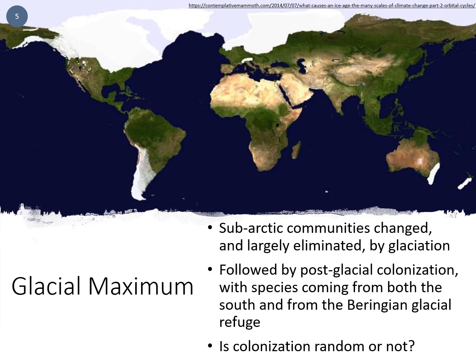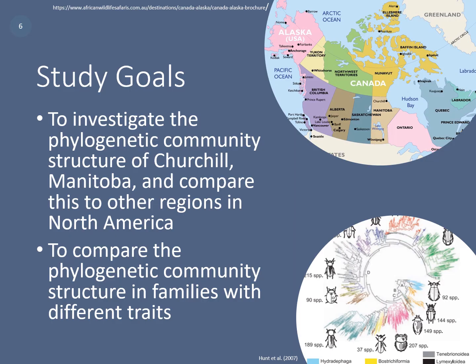Subarctic communities were changed and largely eliminated by glaciation, followed by post-glacial colonization with species coming from both the south and from the Virginian glacial refuge. One of the questions I seek to answer is: was this colonization random or not? This study aimed to investigate the phylogenetic community structure of Churchill, Manitoba, and compare this to other regions in North America. I chose to use the more temperate region of Guelph, Ontario for comparison. The other goal is to compare the phylogenetic community structure in families with different traits — specifically habitat preferences (terrestrial or aquatic) and feeding mode (herbivore, predator, or scavenger).